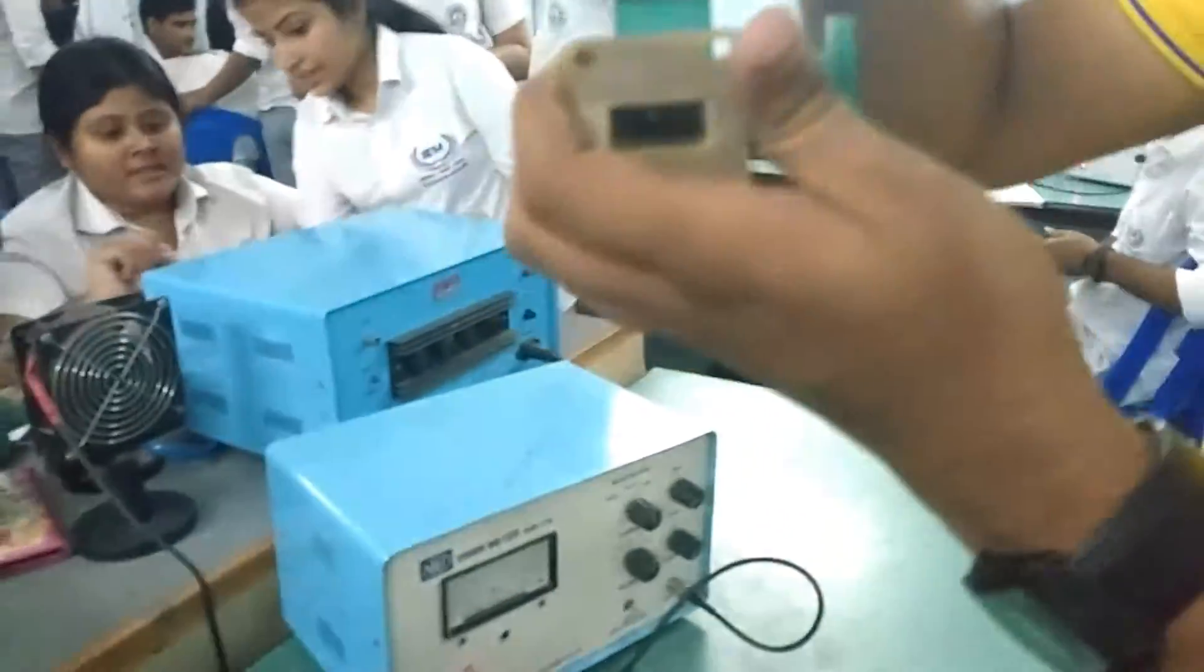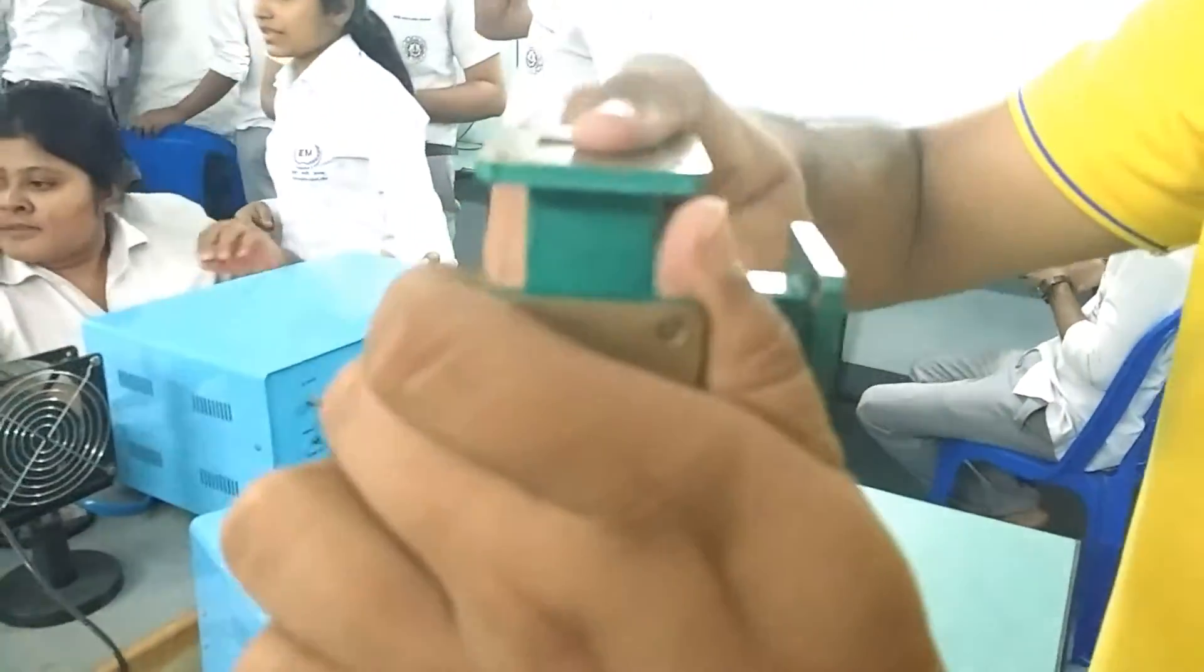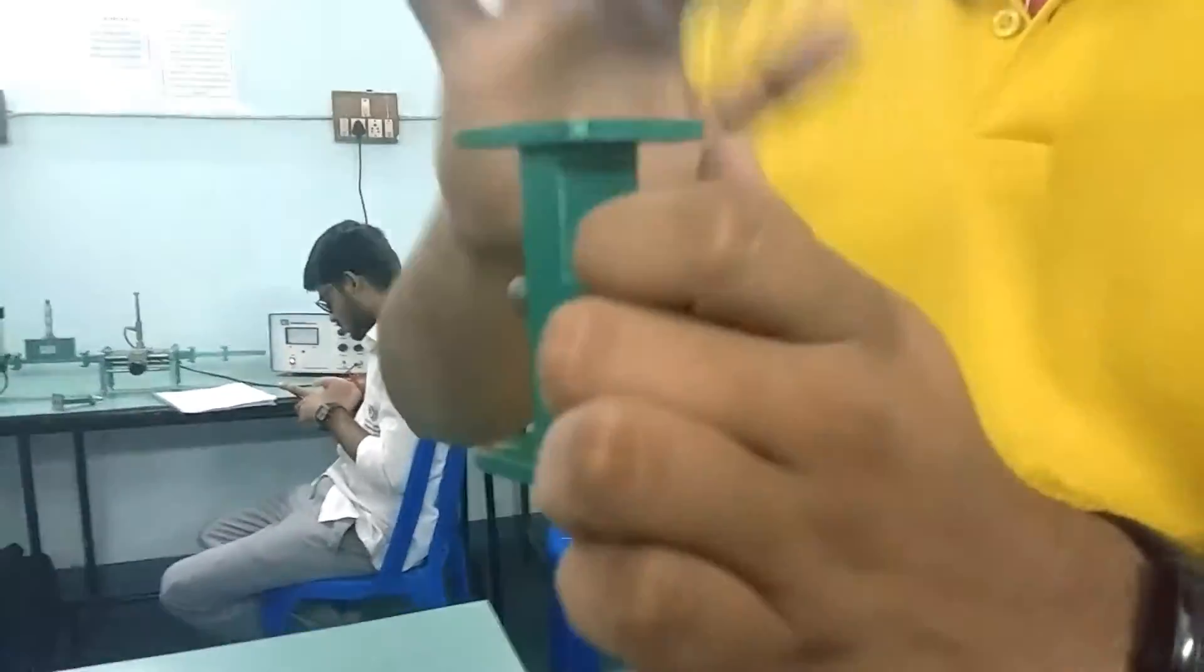In this experiment we fix anyone as the input and for that particular set we will have three readings. We will put the output here, here and here and all the remaining ports are sorted with the matched load. So for one particular set we are having three readings.